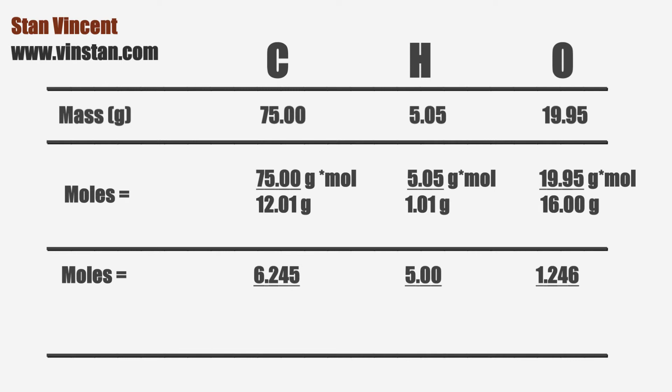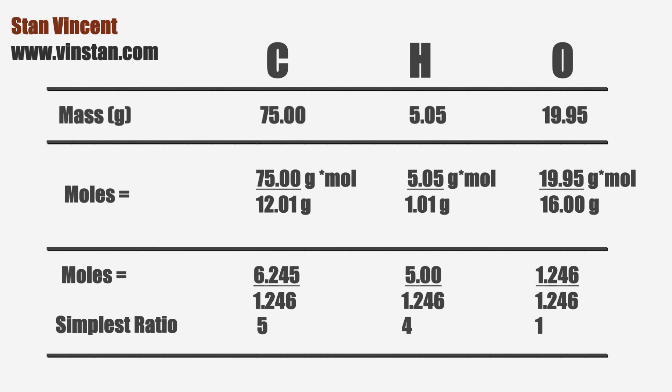To obtain the simplest ratio, we will divide all three numbers by the smallest value, in this case by 1.246. This gives us the simplest ratio in which the elements are combined, or the empirical formula of the compound, which is C5H4O1.